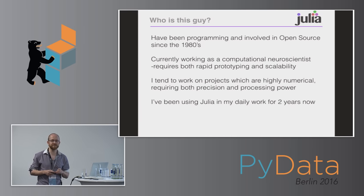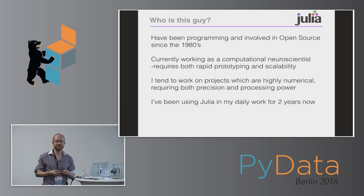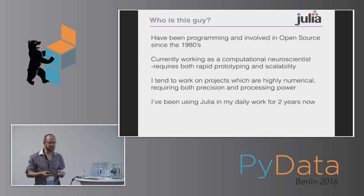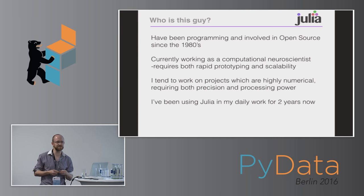I work here in Berlin as a computational neuroscientist, and this field involves a lot of diverse skills. You need to be able to develop models very quickly — whether you're playing with data or making a model to explain a biological system — you want to try out ideas very quickly. But at the same time, everything in the brain just scales massively. So if your idea looks promising, you need to scale up your code massively and run these huge simulations at some point.